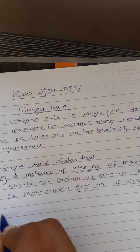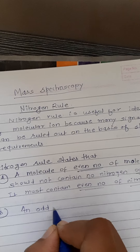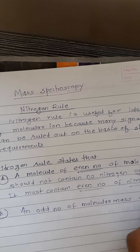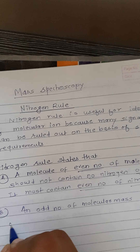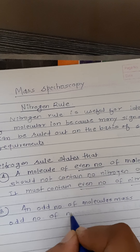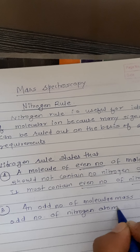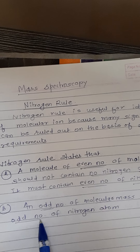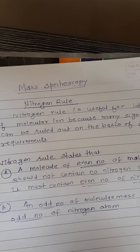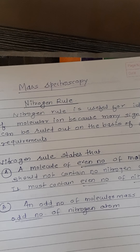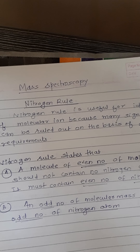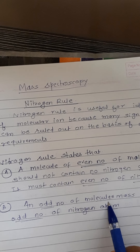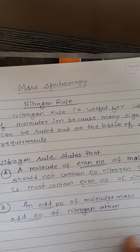Second: an odd number of molecular mass requires an odd number of nitrogen atoms. It means that if the molecular mass of the compound is odd — for example 63 — it may contain three nitrogen atoms, since three is an odd number and 63 is also odd. So an odd number of molecular mass requires an odd number of nitrogen atoms.